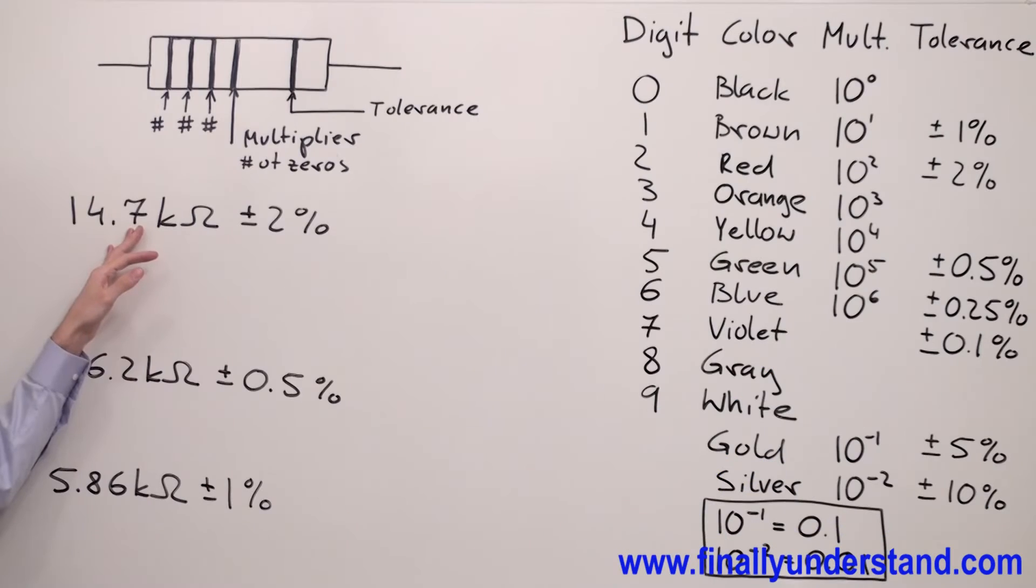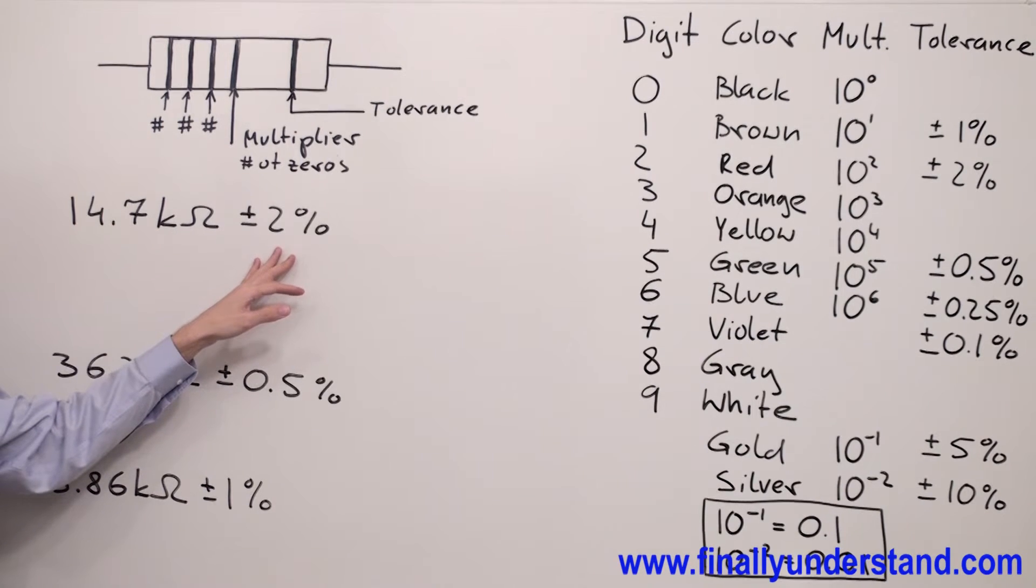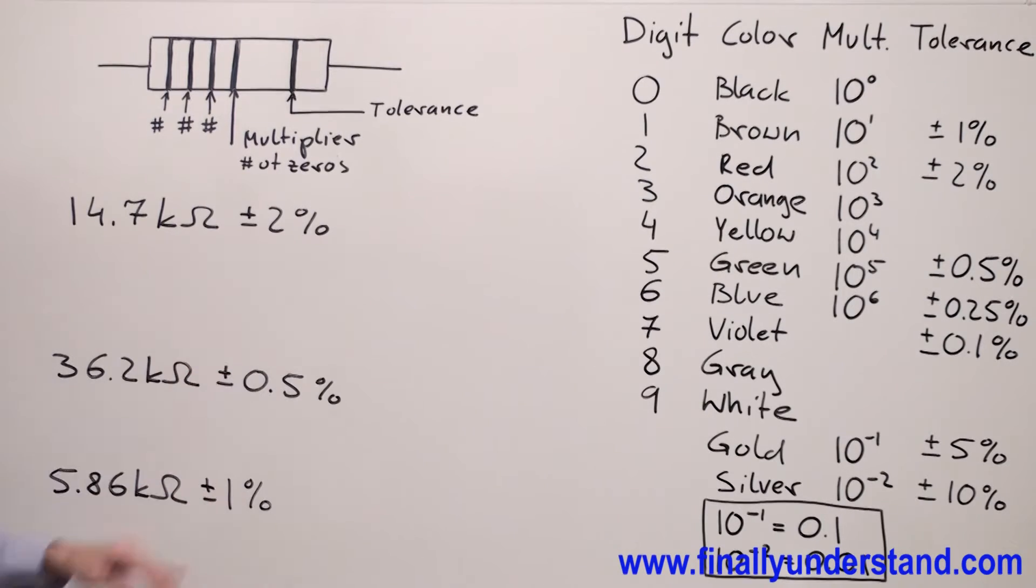Anytime you are going to have values of resistors which have third digit different than zero, also when you are going to have decimal point and the tolerance different than 5% and 10%, you will deal with five band resistors.